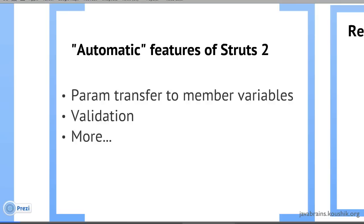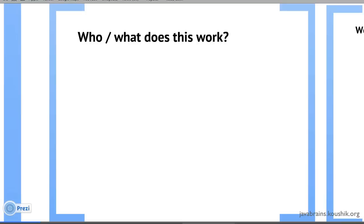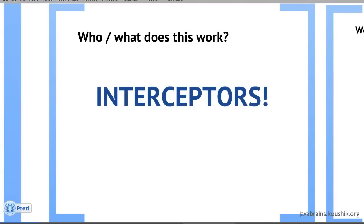That's the advantage of using a framework like Struts 2. But then the question is, who is actually doing all that work? We don't really bother about it because it's taken care of for us. But it's a good thing to understand what's happening so that we can write our own out-of-the-box features to use everywhere in our application. The answer, of course, is interceptors. Interceptors come with Struts 2, and a lot of these automatic features are actually implemented in the framework by using interceptors.